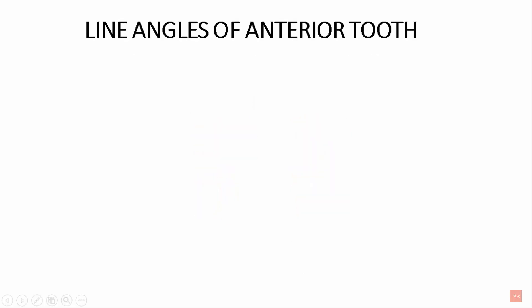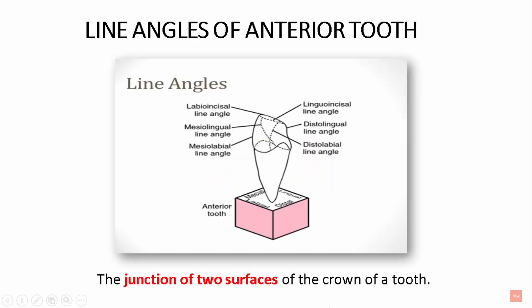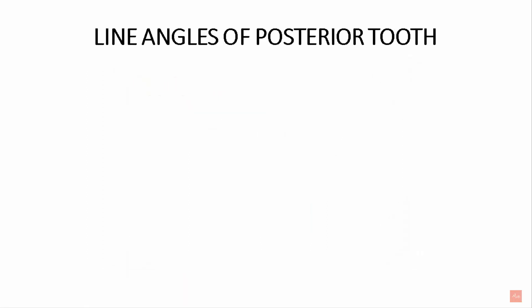Now let's see what are line angles of the anterior teeth. The junction of two surfaces of the crown is known as a line angle. Examples include: the labioincisal line angle, mesiolingual line angle, mesiolabial line angle, linguoincisal line angle, distolingual line angle, and distobuccal line angle. So there are six line angles in the anterior tooth. Moving on to the line angles of the posterior tooth.